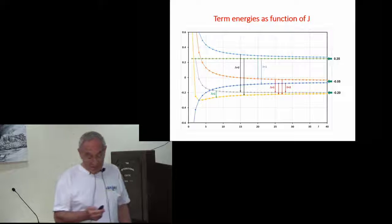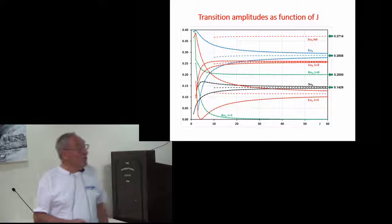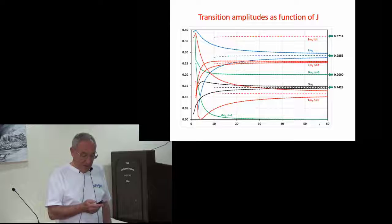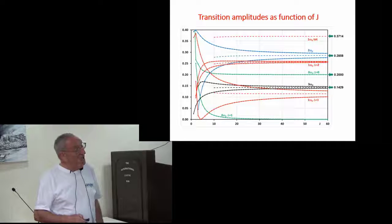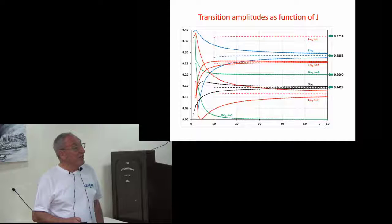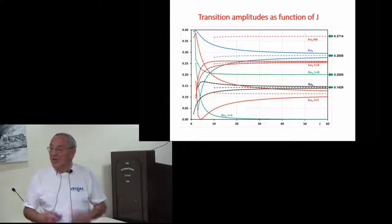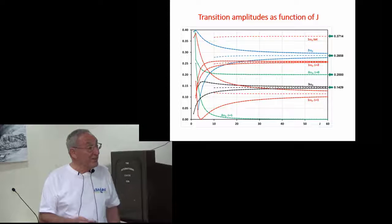And that is for the corresponding amplitudes. You have a dependence on the J state, but at large Js you would get exactly the same amplitudes of the corresponding components of 0.1, 0.2, and 0.3 as you would have in condensed matter.